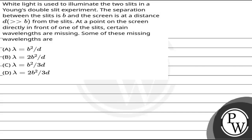Hello Bacho, let's read the question. The question says: white light is used to illuminate the two slits in Young's double slit experiment. The separation between the slits is b, and the screen is at a distance d (much greater than b) from the slits. At a point on the screen directly in front of one of the slits, certain wavelengths are missing. Some of these missing wavelengths are?